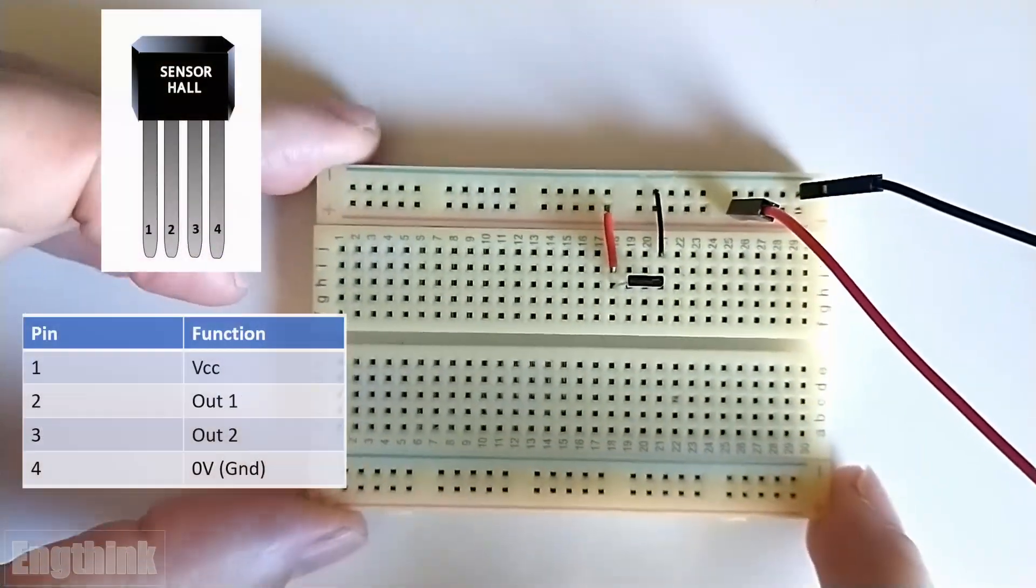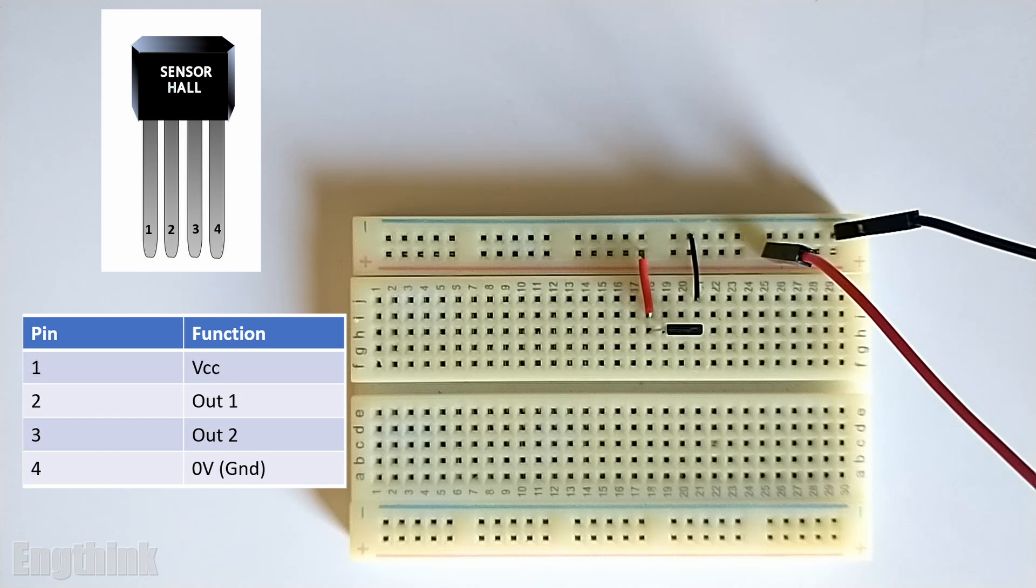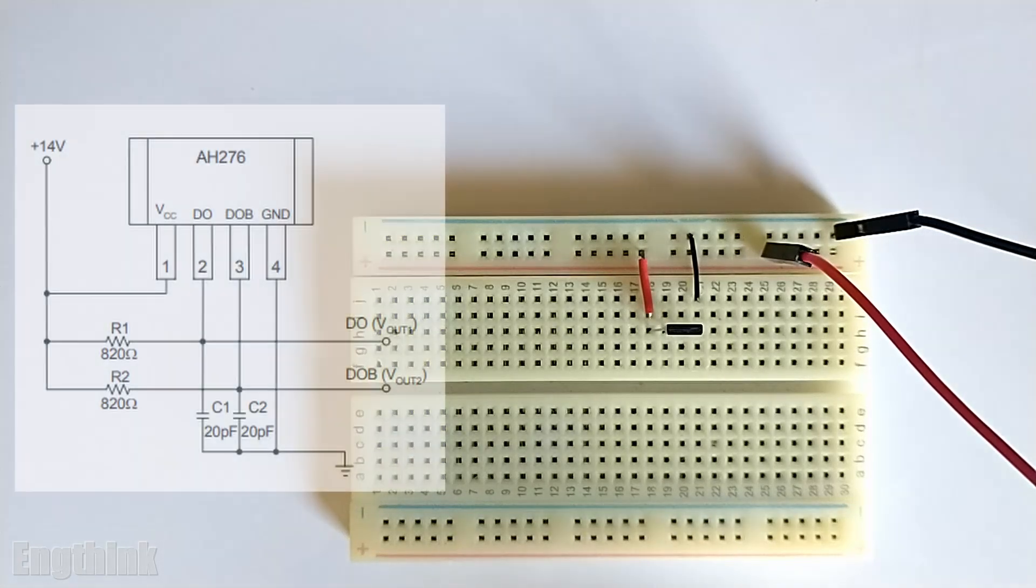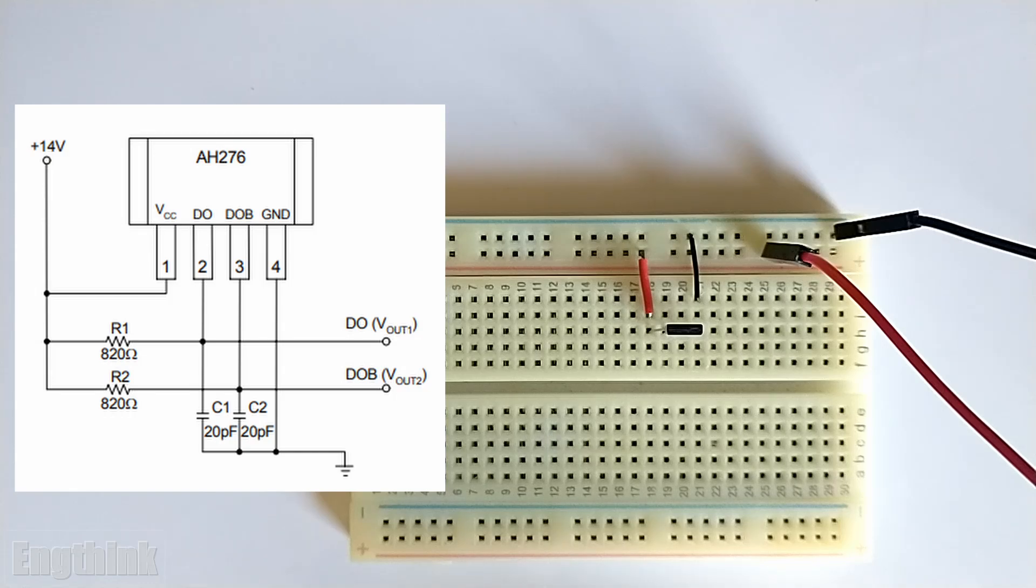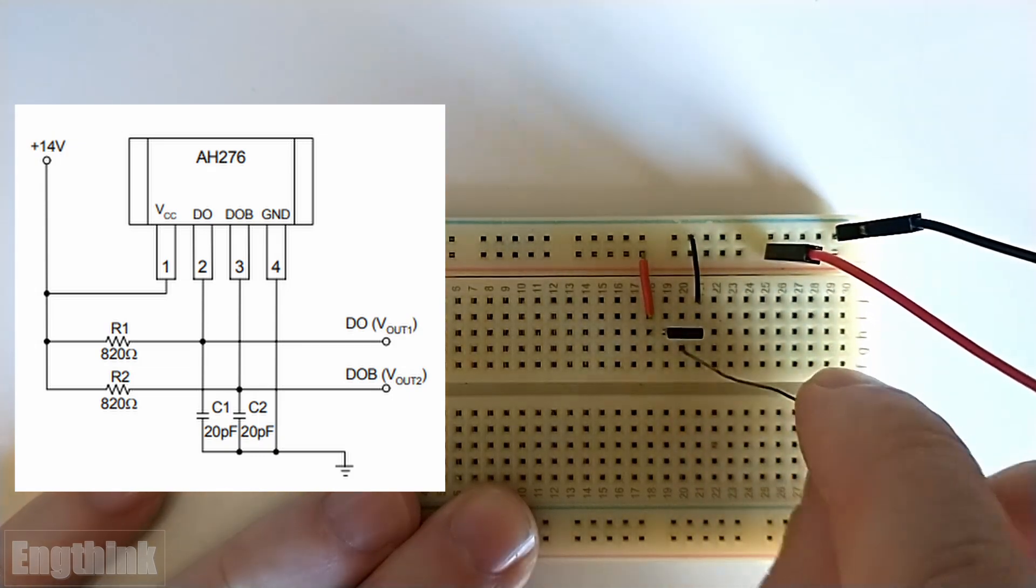Now we just need to check the outputs. However, for the outputs we need to check the datasheet because there is a detail when we want to use the outputs. As we can see, a resistor is necessary for each of the outputs. The value is around 820 ohms. This is for 14 volts DC.